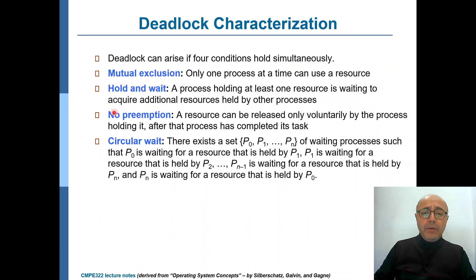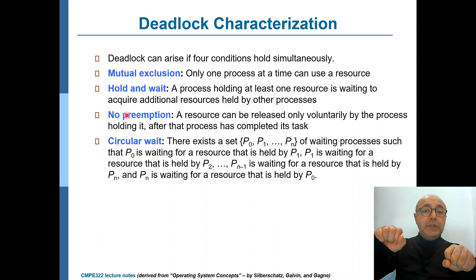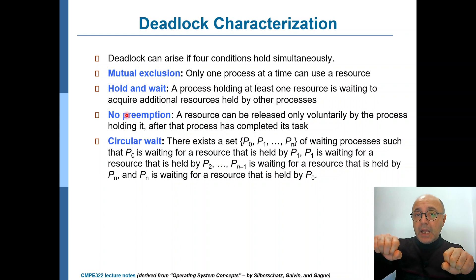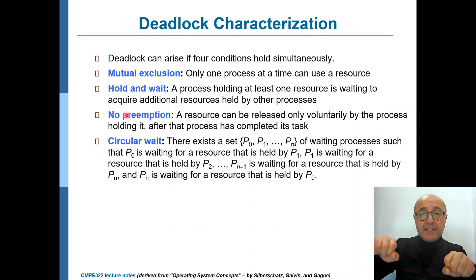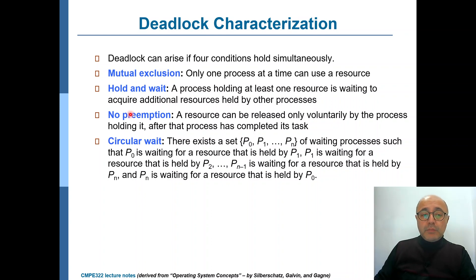The third condition is no preemption. Our processes are kind processes. R1 is held by P1 and R2 is held by P2, and we assume P1 cannot forcibly take R2 — it has to wait for P2 to complete its task with that resource and voluntarily release it, so that P1 can grab it and proceed. So we are not assuming preemption.